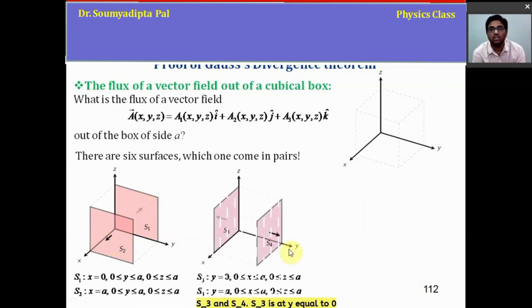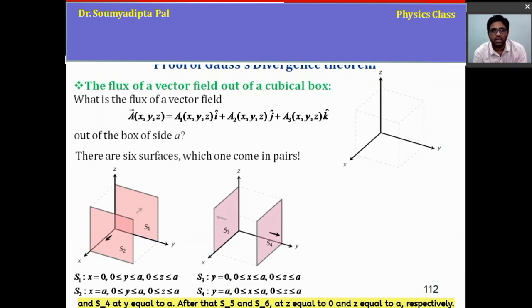Then S3 and S4, where S3 is at y equal to 0 and S4 at y equal to A. After that, S5 and S6 at z equal to 0 and z equal to A respectively.